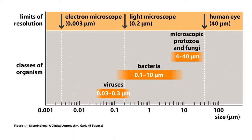We have the same biases when looking at living things. If you have good vision, you can see something down to about 40 micrometers — that's the limit of what you can make out, and you'll see it as a tiny dot. Anything smaller might as well not exist unless you have a microscope. We need a light microscope to see protozoa, fungi, and bacteria, and we need an electron microscope to see most viruses and things that are smaller still.